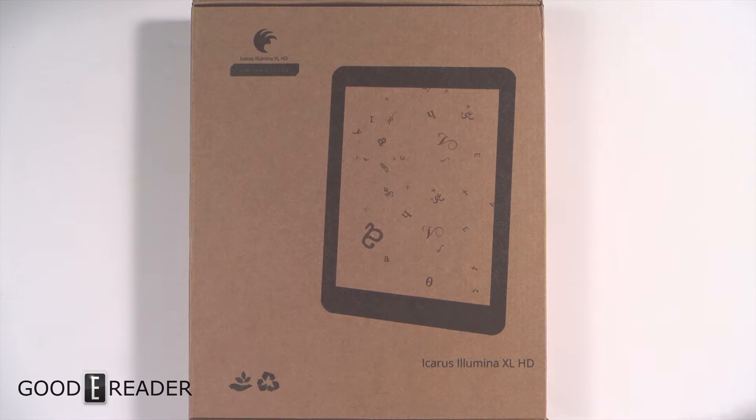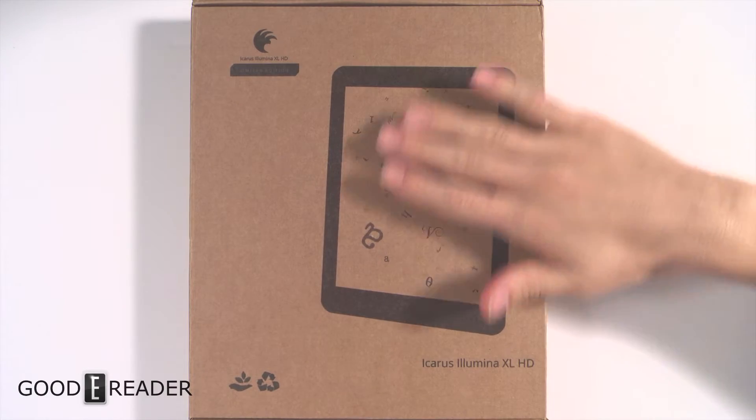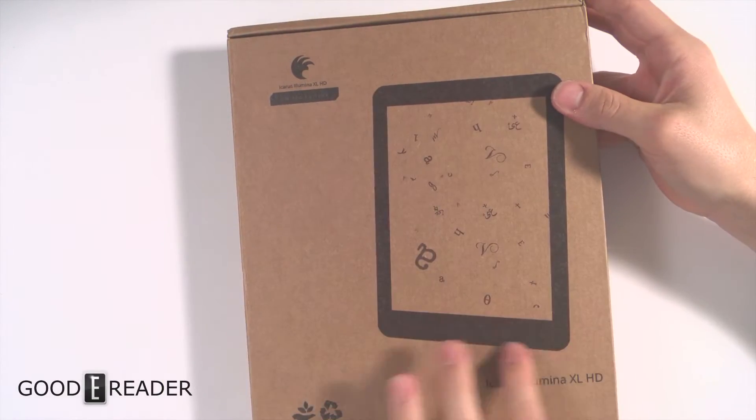It has a 1.8 gigahertz processor, 1 gig of RAM, and 16 gigs of internal storage. Not bad. The box, however, has been scaled back. They used to have full color printouts, but now they've gone with a simplistic cardboard design on all six sides except for the front, which has a little bit of ink there.